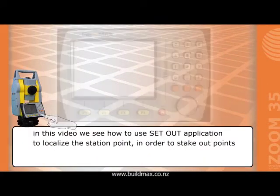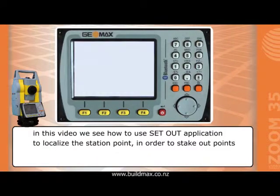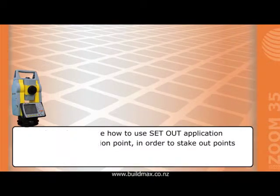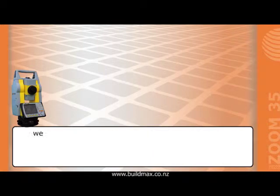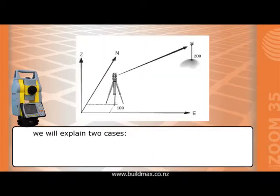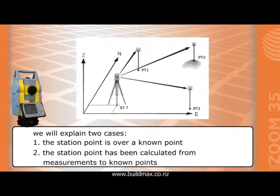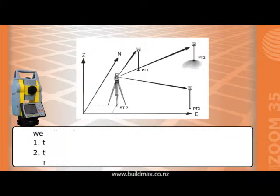In this video we see how to use the set-out application to localize the station point in order to stake out points. We will explain two cases: the first where the station point is over a known point, and the second where the station point has been calculated from measurements to known points.